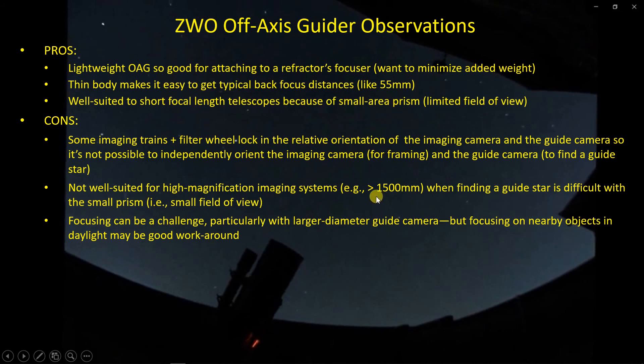Once again not well suited for high magnification systems and here I'm, more or less arbitrarily, defining a high magnification system as being one with a focal length larger than 1500 millimeters. Finding a guide star is going to be difficult with a small prism which implies small field of view and then if you were restricted by how the imaging camera is oriented relative to the guide camera that's just another restriction. Focusing can be a challenge, there's no helical focuser that comes with the current off-axis guider. However I did find that focusing on nearby objects in the daylight is maybe a good workaround for any off-axis guider and so I'm pretty pleased with those results and that may eliminate that challenge in this case.